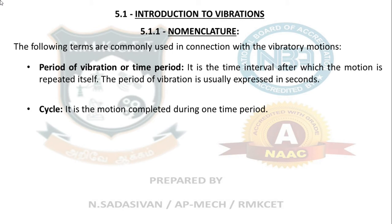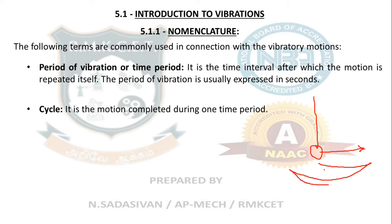A cycle is the motion completed during one time period. For a simple pendulum, the pendulum starts at center, you pull it to one side and release it — it moves to the other side and returns. The time taken for this one complete motion is called time period, and that complete motion is the cycle.